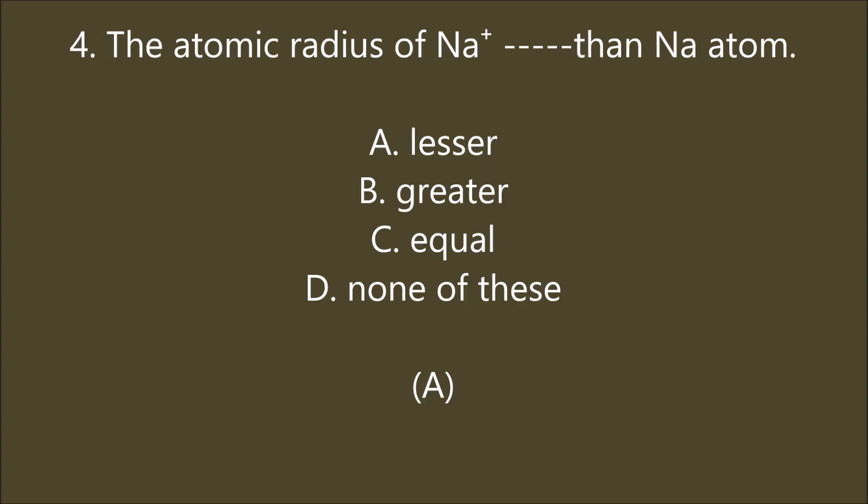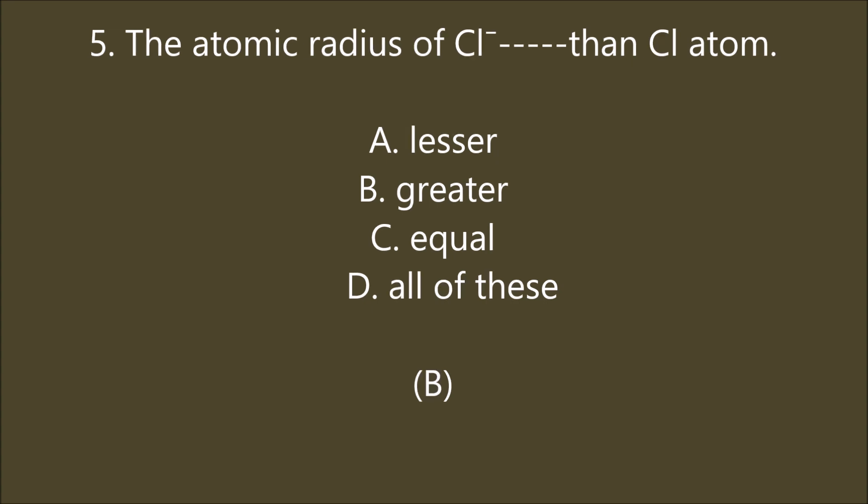The atomic radius of sodium plus ion is ___ than sodium atom: lesser, greater, equal, or none of these. A is the right answer — lesser. Sodium atom contains 11 electrons, whereas sodium ion contains 11 protons and 10 electrons. The nucleus of sodium plus ion attracts outer shell electrons with strong nuclear force. As a result, the sodium plus ion shrinks in size. Therefore, the size of sodium plus ion is less than sodium atom. In general, the positive cation of an element has less size than its neutral atom.